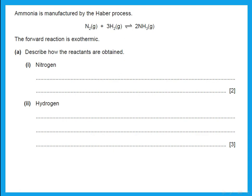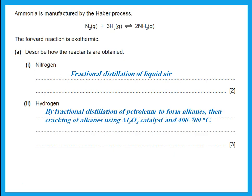Ammonia is manufactured by the Haber process. The forward reaction is exothermic. Describe how the reactants are obtained. We get nitrogen from fractional distillation of liquid air. For hydrogen, first fractional distillation of petroleum to form alkanes, and then cracking of the alkanes using an aluminum oxide catalyst at 400 to 700 degrees centigrade.